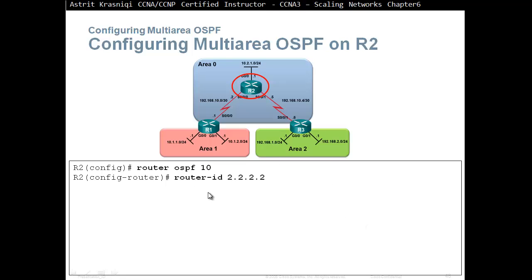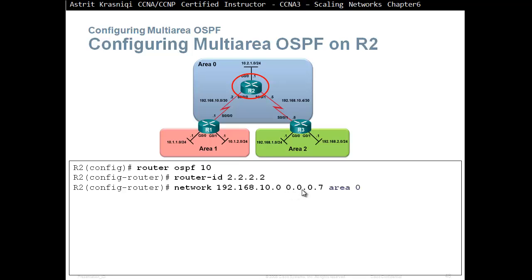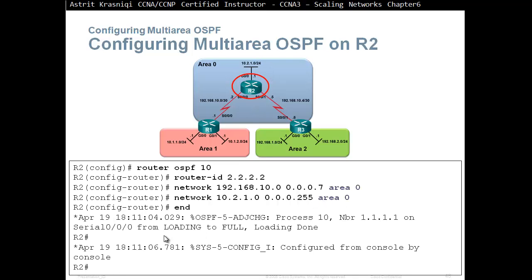For Router 2, again same process 10, router ID, then network statements. We say 'network 192.168.10.0 0.0.0.7' — that wildcard mask will match the interfaces on that network. Then 'network 10.1.2.0', 'network 10.2.1.0 0.0.0.255 area 0'. So this network is in area 0, and right away we're going to have an adjacency with Router 1.